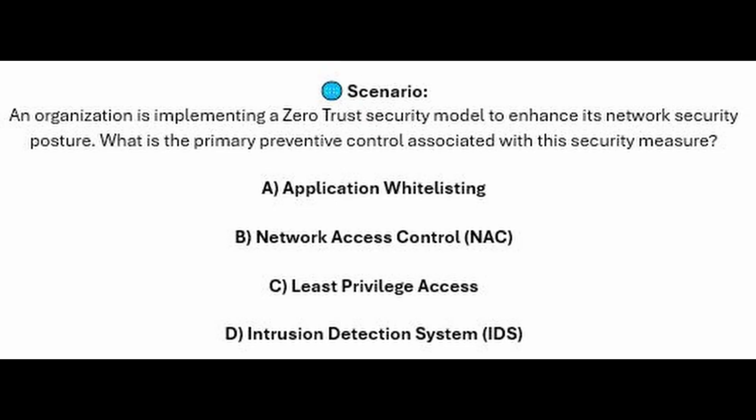For the next question, question number three: An organization is implementing a zero-trust security model to enhance its network security posture. What is the primary preventive control associated with this security measure?